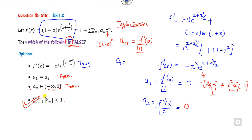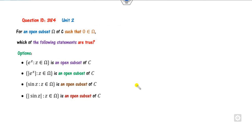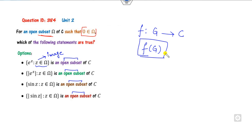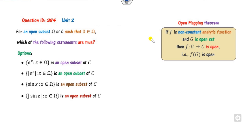Look at the next question: given an open subset Ω of the complex plane with 0 ∈ Ω, which statement is true? Think of f as a mapping from Ω to the complex plane — is f(Ω) open? Recall the open mapping theorem: if f is a non-constant analytic function and Ω is open, then f(Ω) is also open. So we just need to verify f is non-constant and analytic.